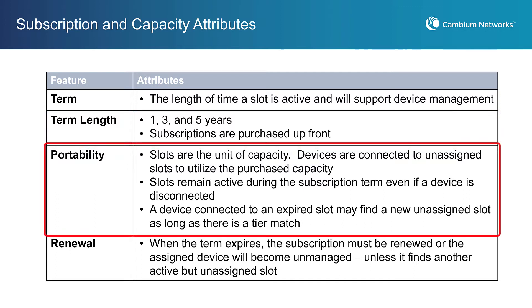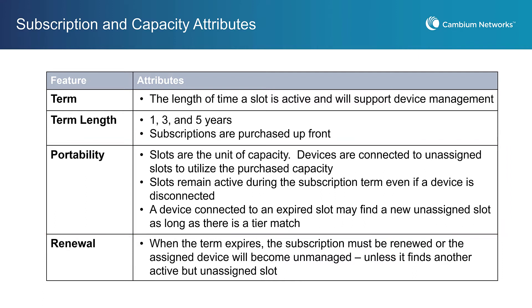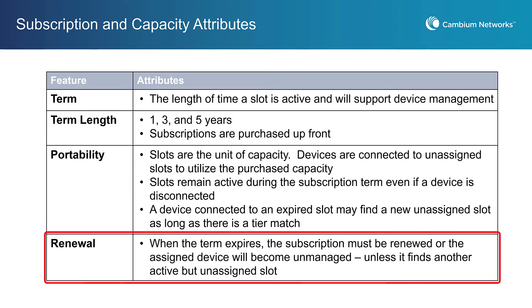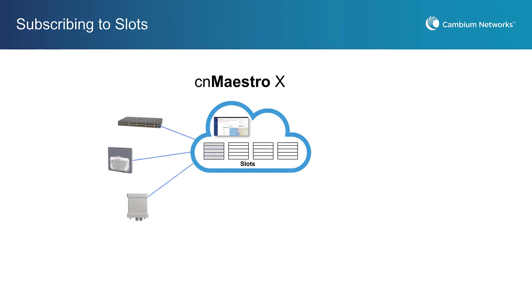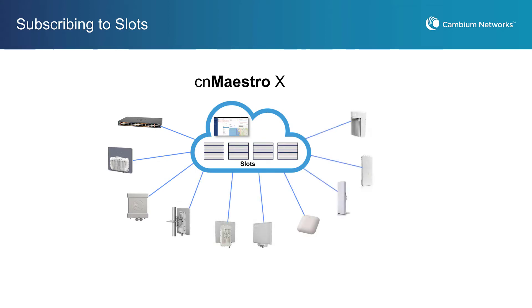Devices are connected to unassigned slots to use the purchased capacity. Slots remain active during the subscription term even if a device is disconnected from it. If the slot expires by reaching its end date, its device may find a new unassigned slot as long as its device tier matches the slot's device tier. When the term expires, you may either renew your subscription or the assigned device becomes unmanaged unless it finds an unassigned slot. As you continue to add devices and purchase subscriptions, you will make a decision each time about how long a term suits your current situation.